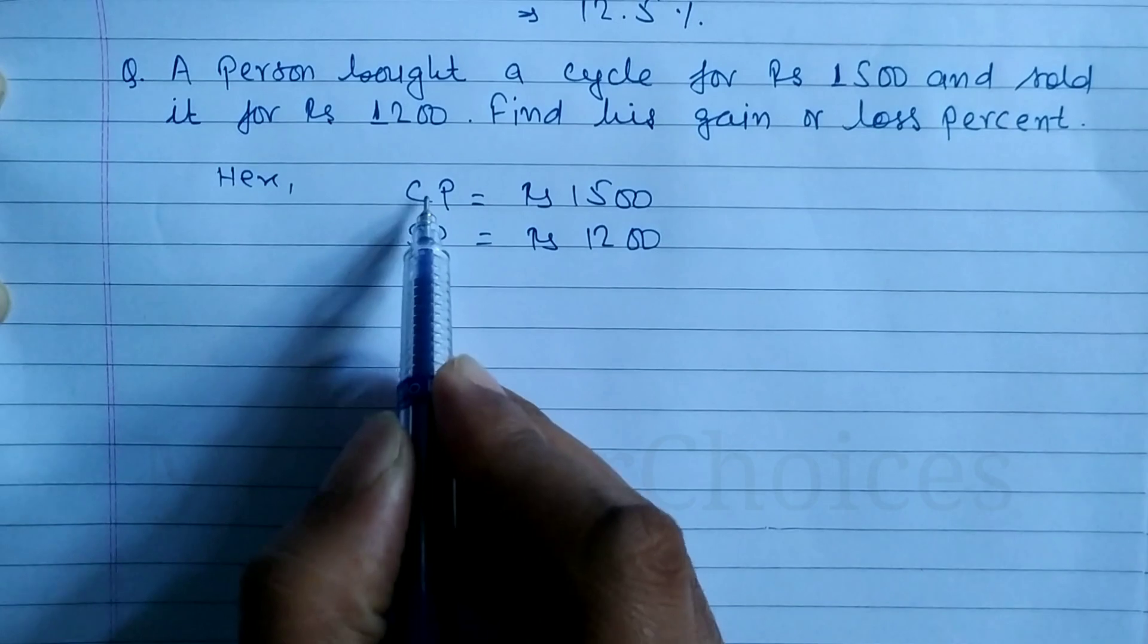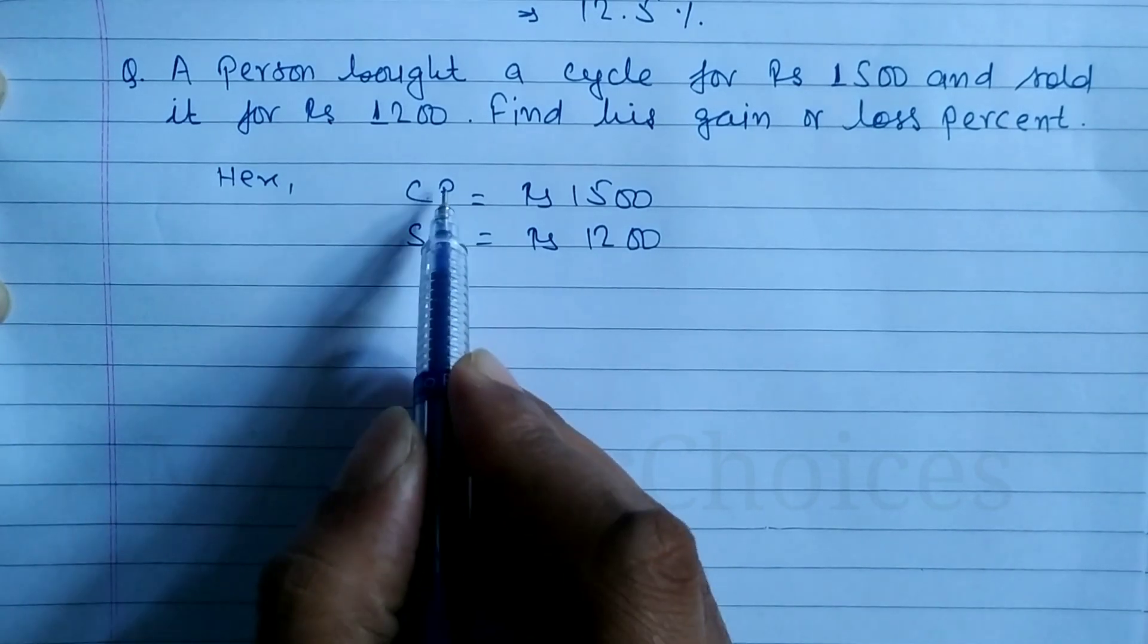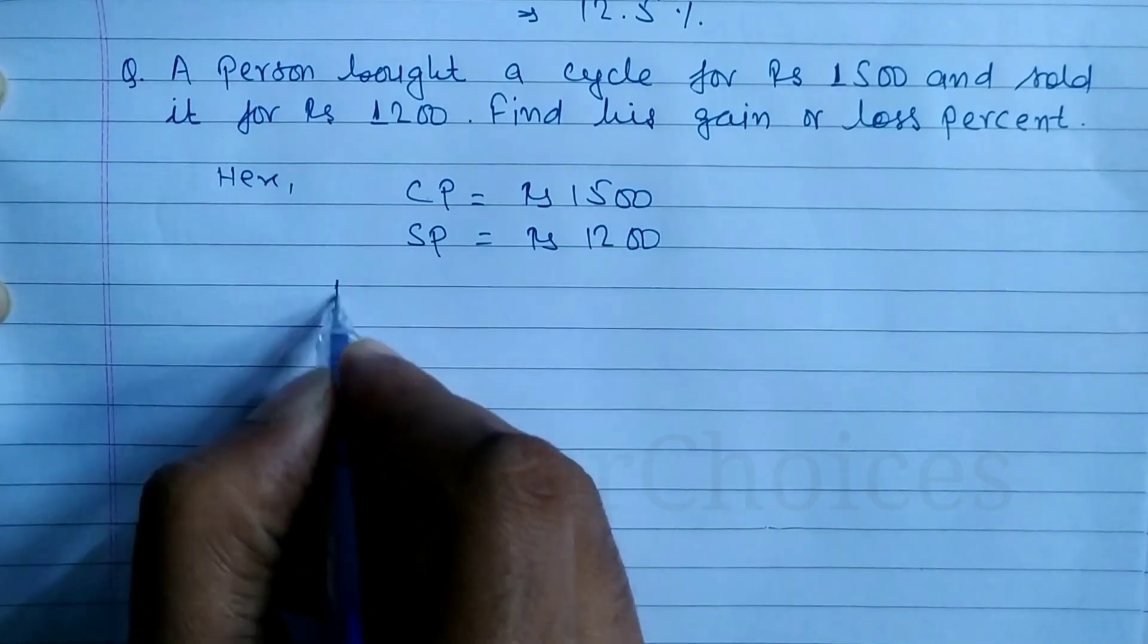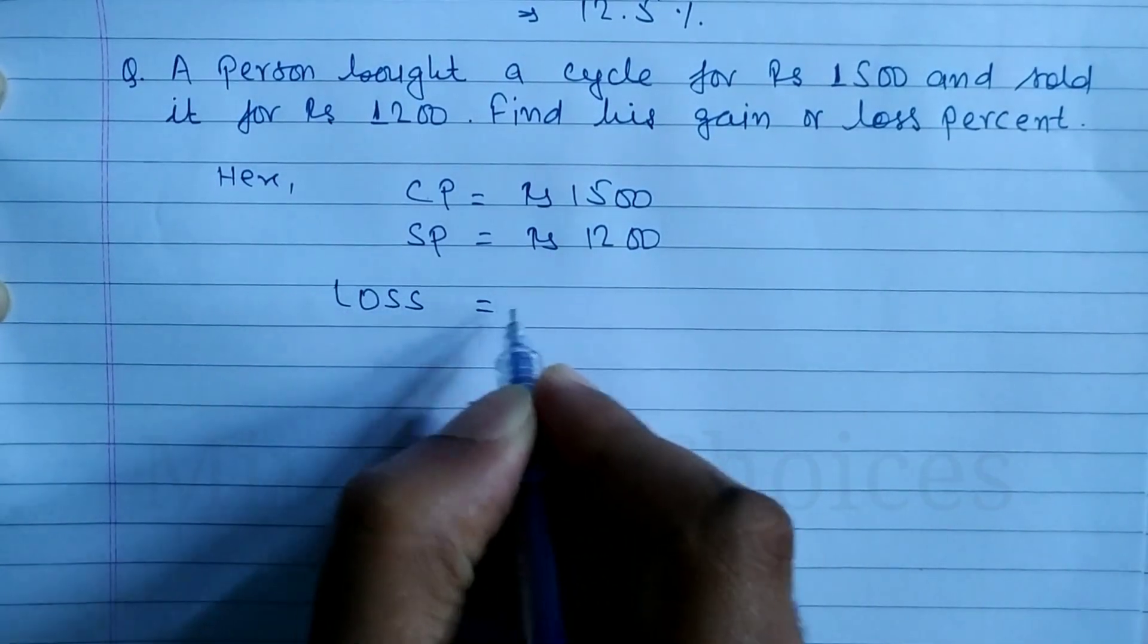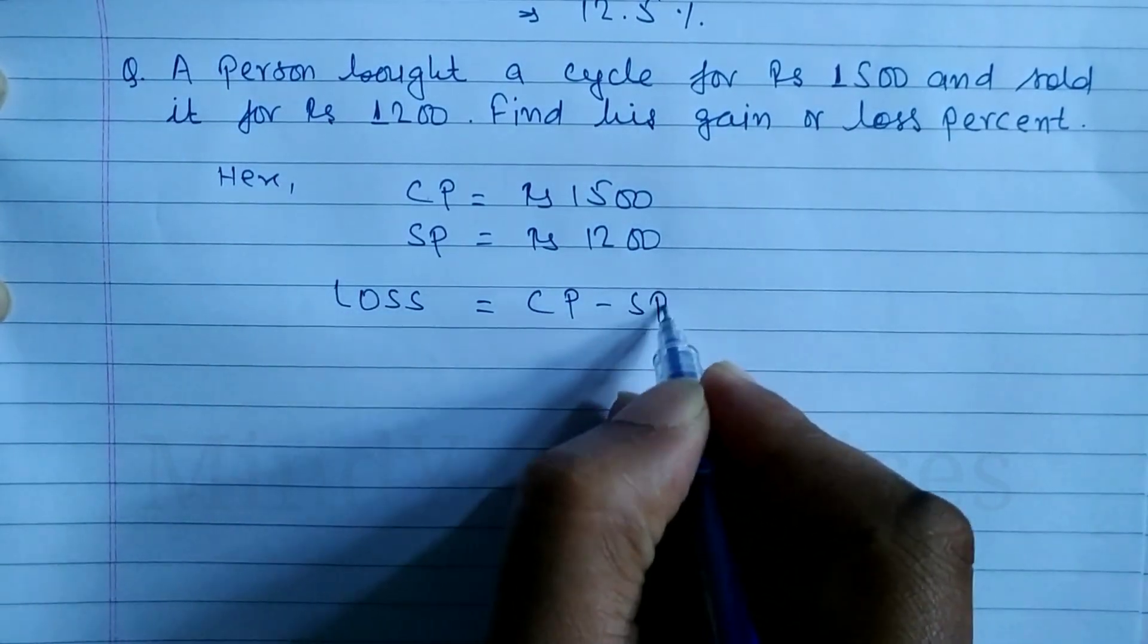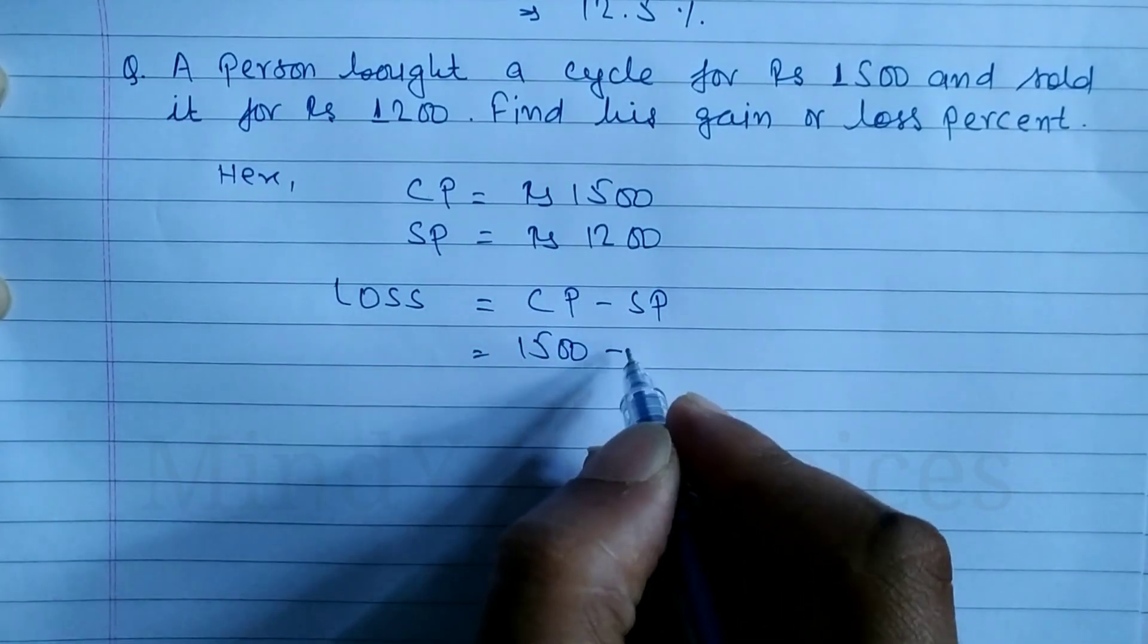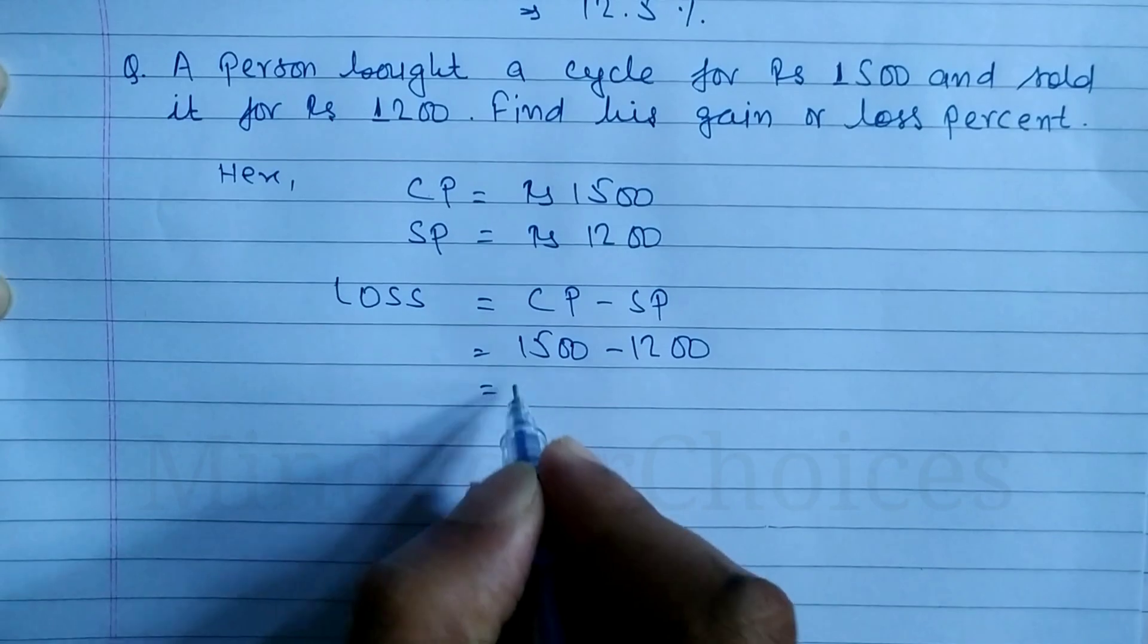CP is greater, cost price is greater than selling price. So there is loss. Loss formula is CP minus SP. CP is equal to 1500 minus SP is equal to 1200. Subtract this, rupees 300.